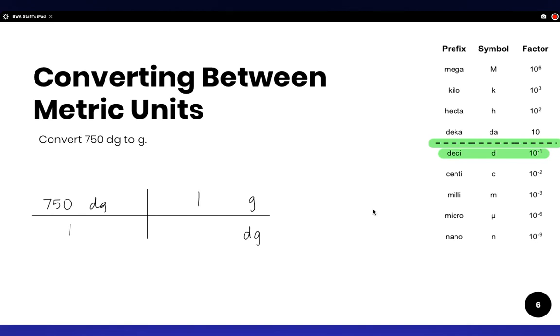So grams will get a 10 because there are 10 desigrams in one gram.